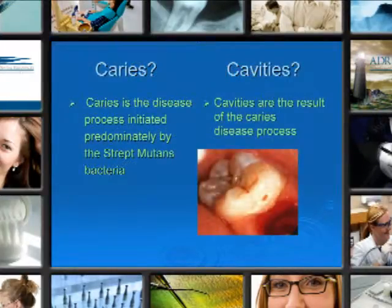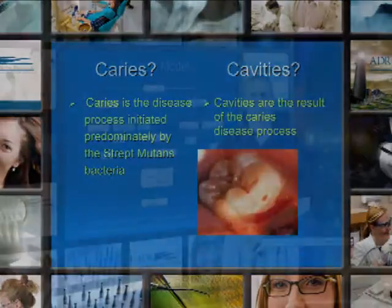Our plan and our process is based on two different modalities. One is caries, the other is cavities. Caries versus cavities: caries is the disease process initiated predominantly by the strep mutans bacteria, and cavities are the result of the caries disease process.